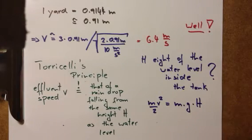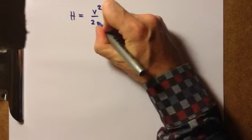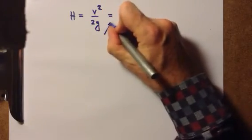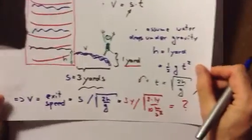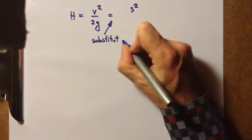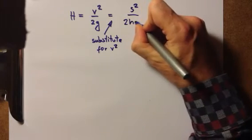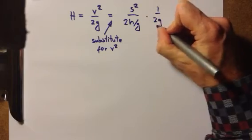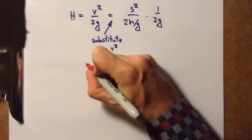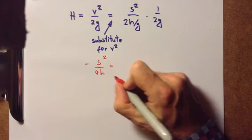If we rearrange this, we obtain capital H, the height of the water level, is equal to V squared divided by two gravitational acceleration. And now we substitute with our result from earlier, we substitute for V, and we obtain S squared. Substitute for V squared, and we obtain S squared divided by two times little h divided by g times one over two g. That can be simplified so that we obtain S squared divided by four h.